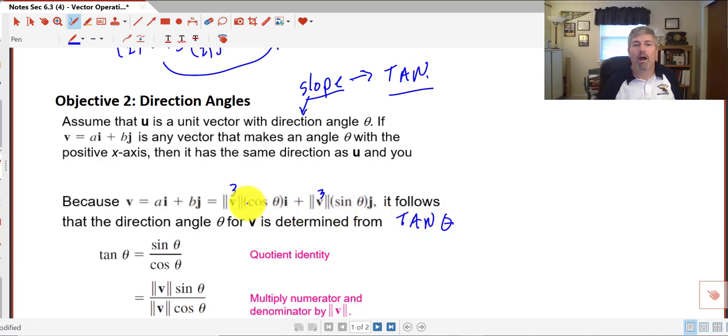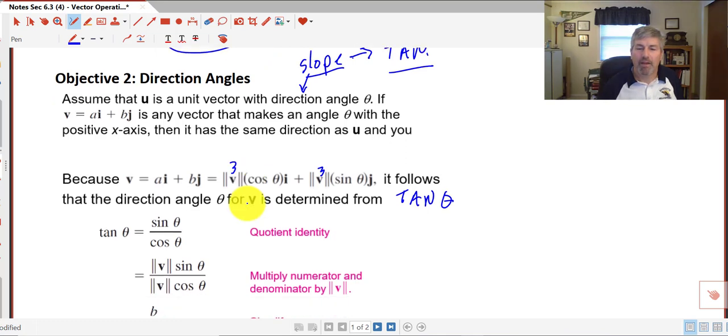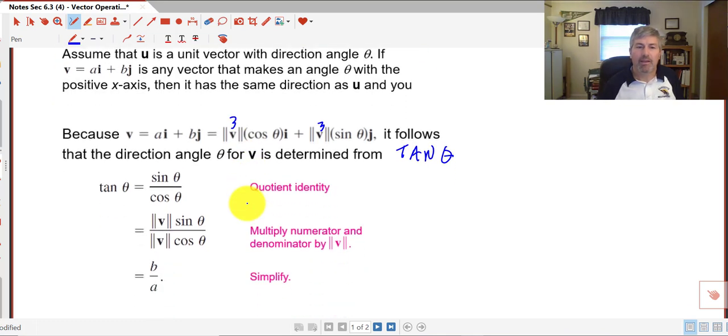They're telling us that the direction angle for our vector is the tangent. We know tangent is sine over cosine. And rewriting it from above here, sine is our magnitude times the sine of theta divided by the magnitude times our cosine of theta. That's still tangent.